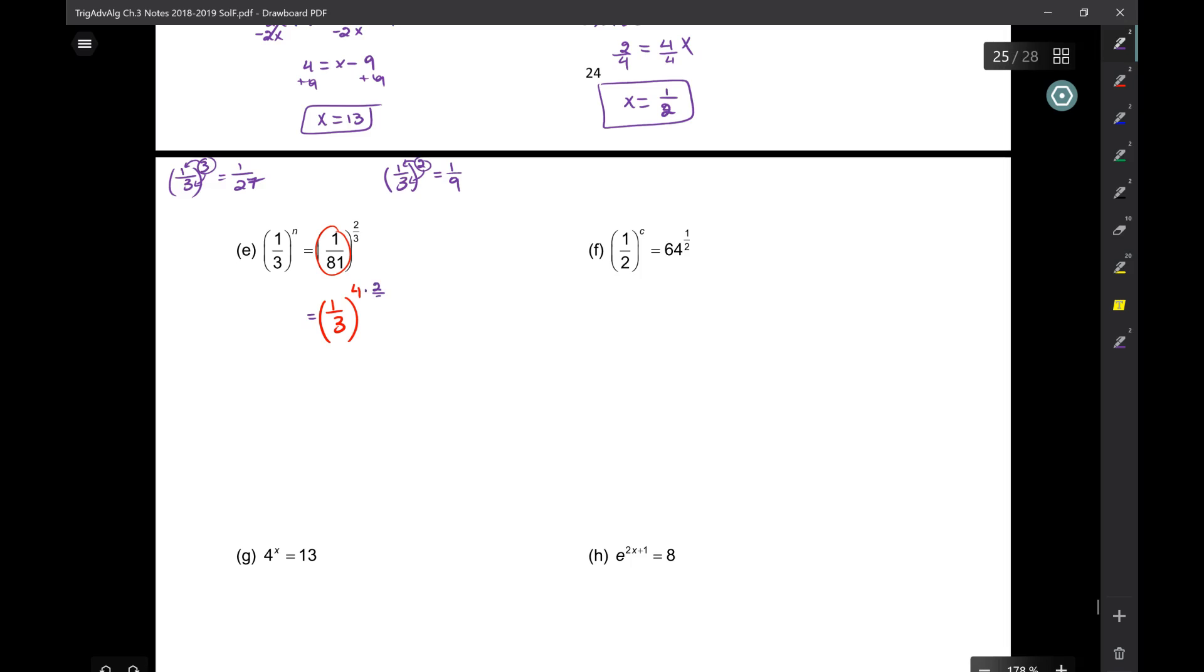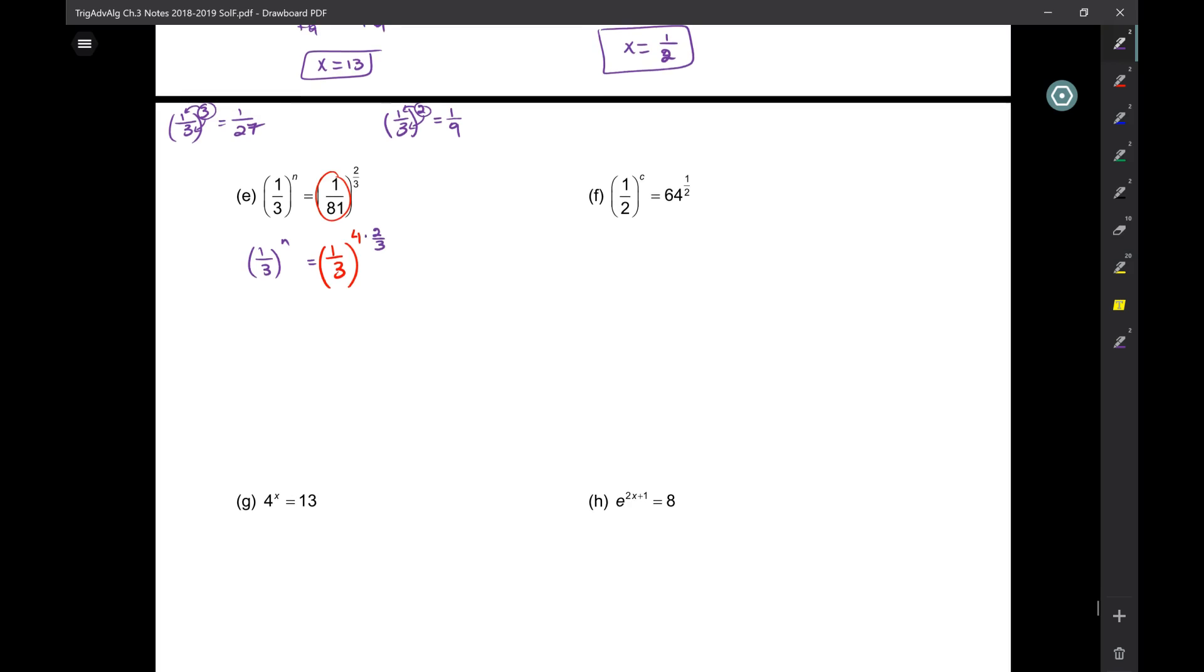So what else do I have? I have times two thirds here. And on the left side of the equation, I have one over three to the n. So now what do I have? Same basis, n equals four times two thirds. Remember that's over one. So eight over three.